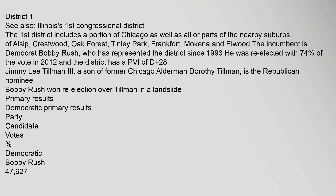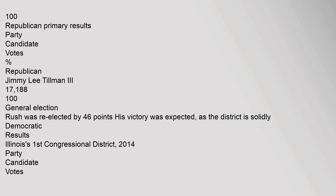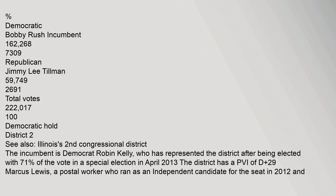Jimmy Lee Tillman, a son of former Chicago Alderman Dorothy Tillman, is the Republican nominee. Bobby Rush won re-election over Tillman in a landslide. Democratic primary: Bobby Rush – 47,627 votes, 100%. Republican primary: Jimmy Lee Tillman – 17,188 votes, 100%. General election: Rush was re-elected by 46 points. Results: Bobby Rush (D) 162,268; Jimmy Lee Tillman (R) 59,749; Total votes 222,017. Democratic hold.